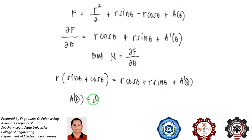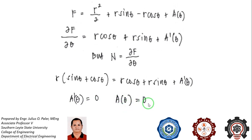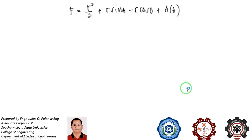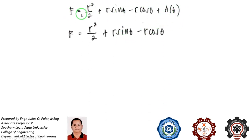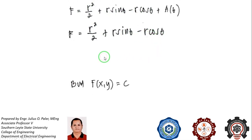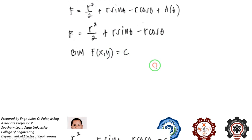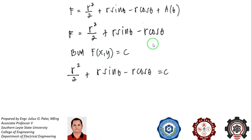Since a′(θ) = 0, it follows that a(θ) = 0. Substituting back, we rewrite f as r²/2 + r·sinθ - r·cosθ, and since f = c, we replace f with c.